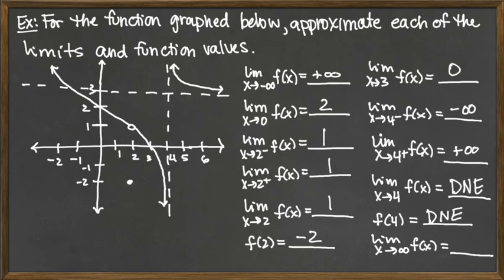The very last thing to assess is the limit as x goes to infinity. As x goes to infinity, we look at the right-hand arrow, and we see it's approaching a horizontal asymptote at the level of y equals 3. So our final answer for the limit as x goes to infinity is 3.